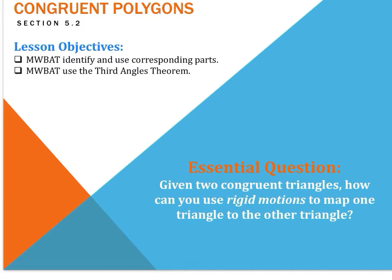Welcome to 5.2 about congruent polygons. Our objectives are to identify and use corresponding parts and use the third angles theorem. Our essential question that we want to answer by the end of the lesson is: given two congruent triangles, how can you use rigid motions to map one triangle to the other triangle?